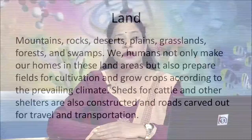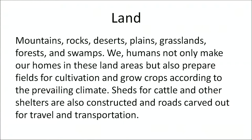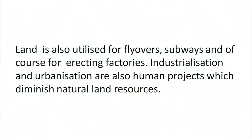Let me begin with land as a natural resource. A physical map includes mountains, rocks, deserts, plains, grasslands, forests, and swamps. We humans not only make our homes in these land areas but also prepare fields for cultivation and grow crops according to the prevailing climate. Sheds for cattle and other shelters are constructed, and roads are carved out for travel and transportation. Land is also utilized for flyovers, factories, industrialization, and urbanization, which diminish natural land resources. Our needs are much more than the available land resources.